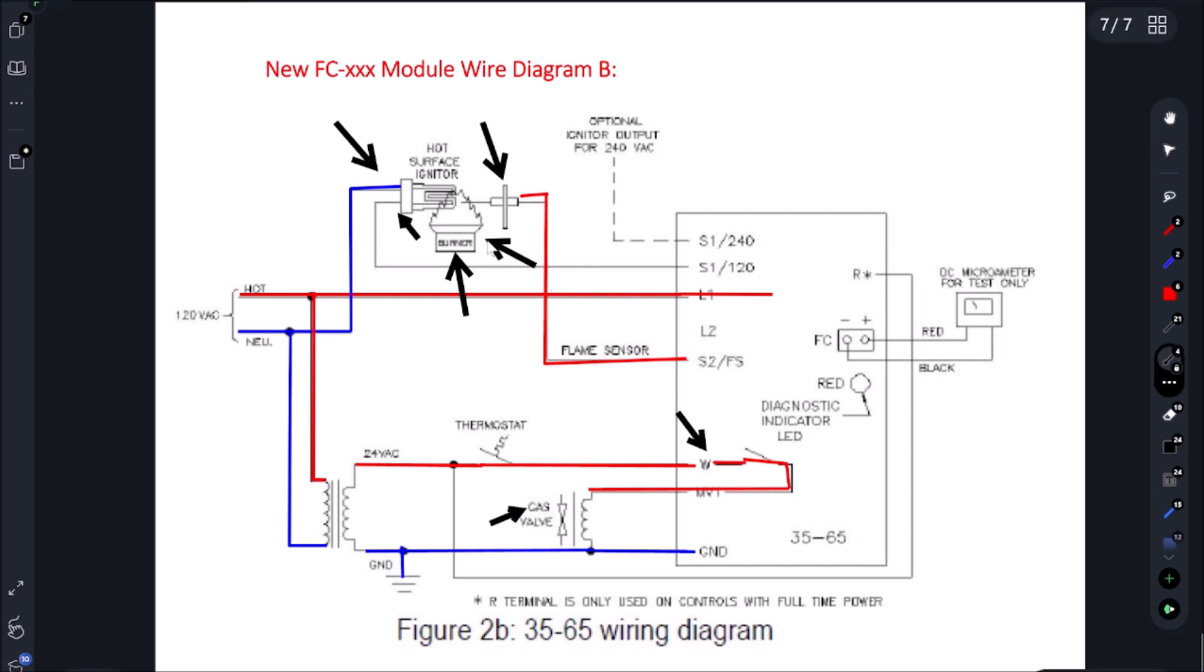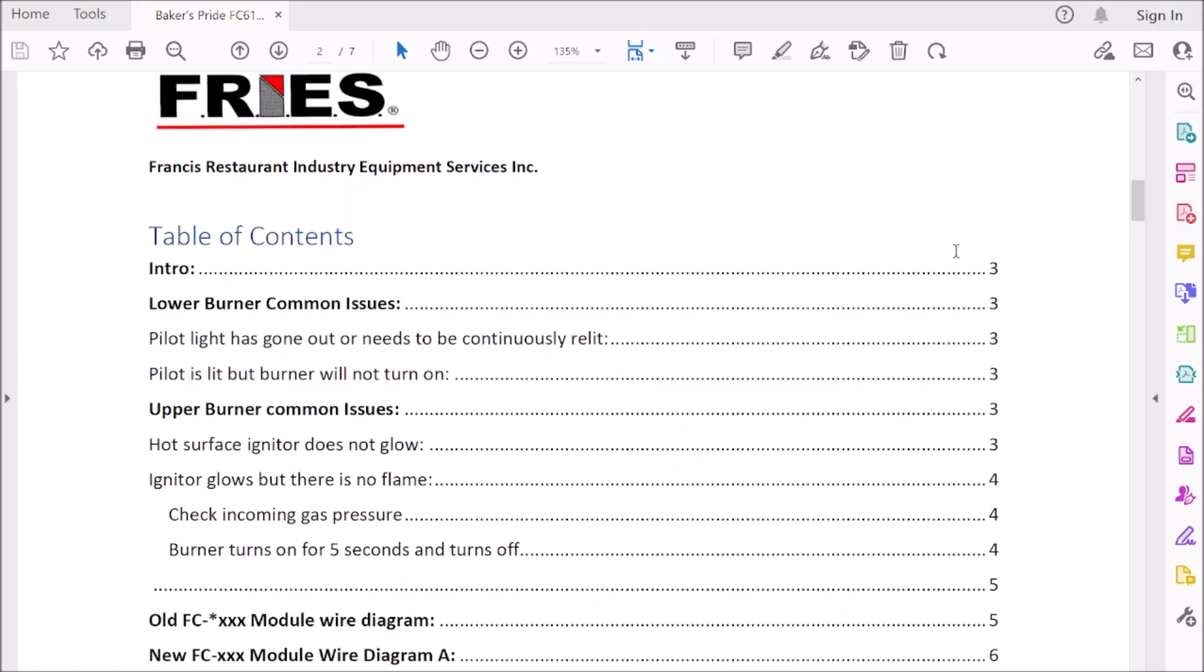There's a visual cue right there. If your burner is on and your hot surface igniter is still glowing, you know you do not have proper flame sense and the issue is either the flame sensor, the wire, or the module. Now that we broke down the sequence of operations, let's go figure out what the issue is.